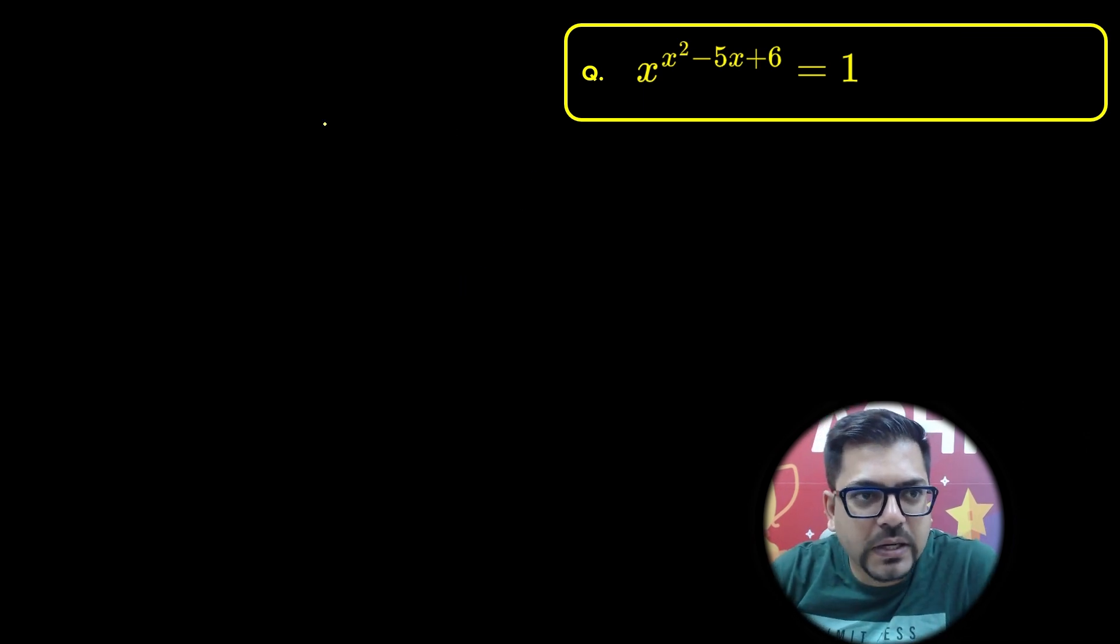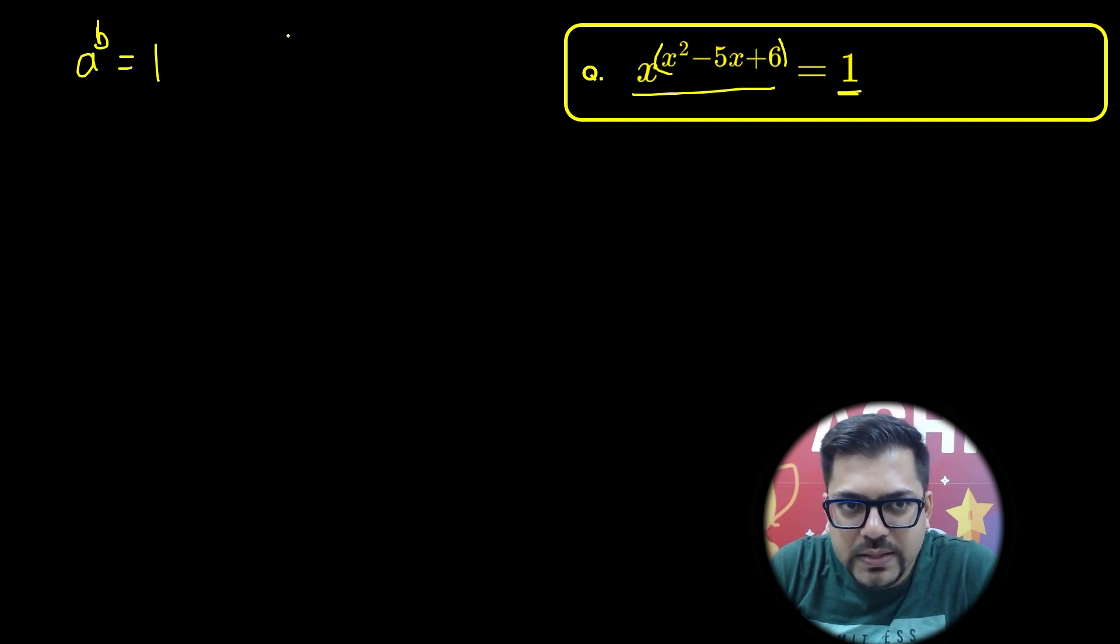So the basic principle is that whenever any exponential number with some power equals 1, you can write it in this format: whenever you have a raised to power b equals 1, generally people assume that a will be 1, but that is only one of the solutions. There are multiple other solutions as well that we need to take care of.